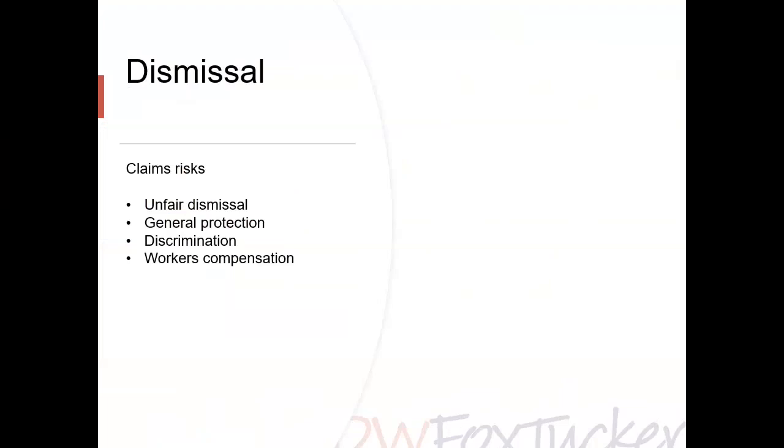Where an employee has not satisfied the minimum employment period, they may look at other options. A common law claim is an option, though not one commonly pursued. Our experience is that where an employee hasn't satisfied that period, the go-to application is a general protection application. Other exclusions apply, including where employees are earning above the high income threshold, or because of the completion of a fixed term contract.